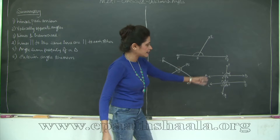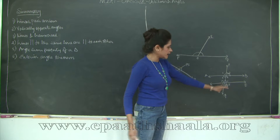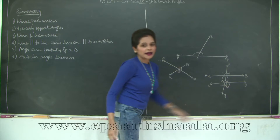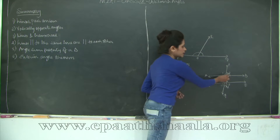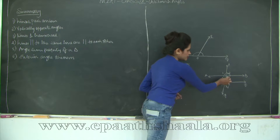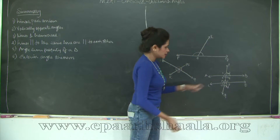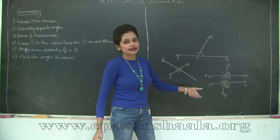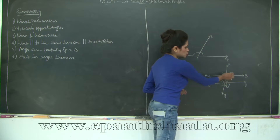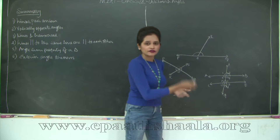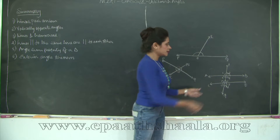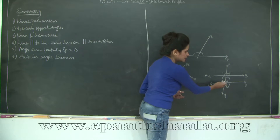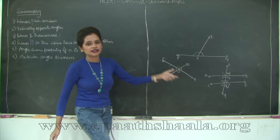Now if it is not given that AB and CD are parallel, but we are told that alternate angles are equal — say 3 and 6 are equal, or 4 and 5 are equal — then AB is parallel to CD. Similarly, if corresponding angles are equal (any pair: 1 and 5, 2 and 6, 3 and 7, or 4 and 8), or if co-interior angles are supplementary (3 plus 5 equals 180 degrees, or 4 plus 6 equals 180 degrees), then AB is parallel to CD.